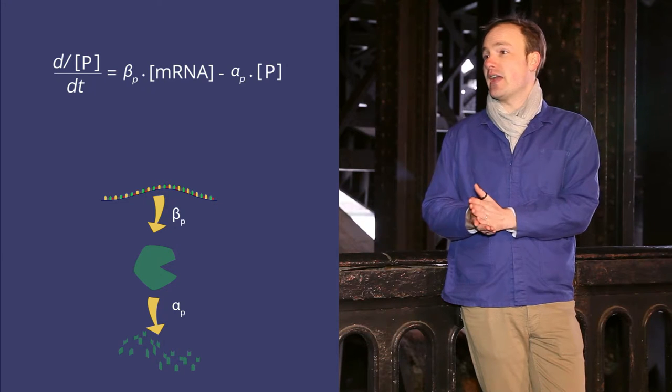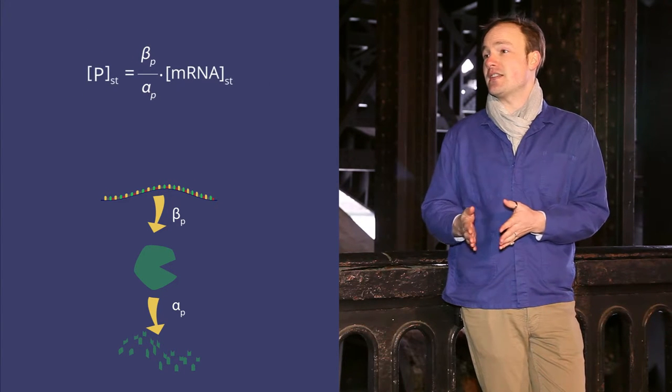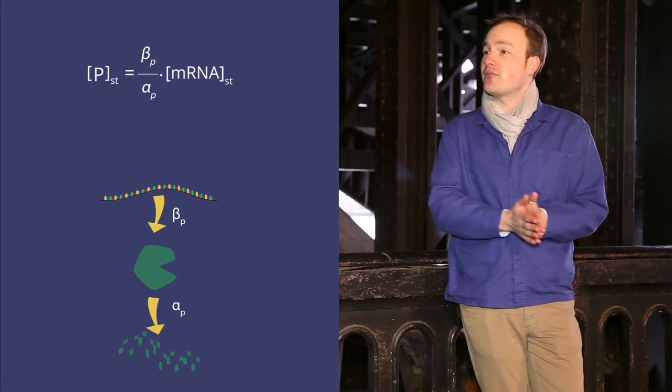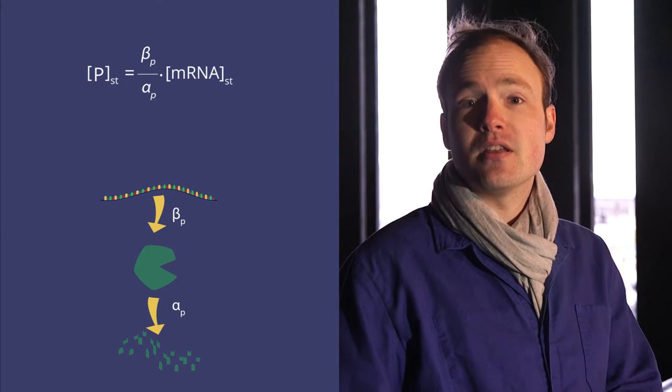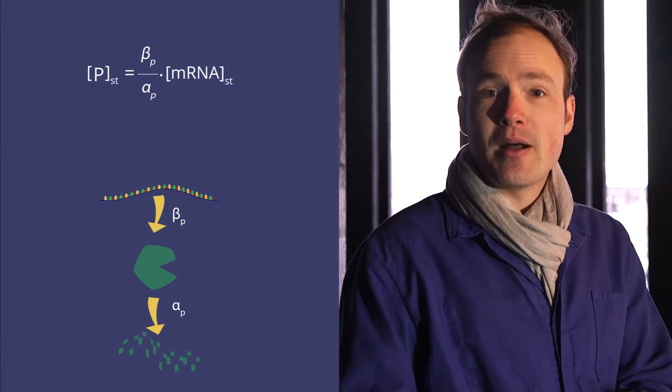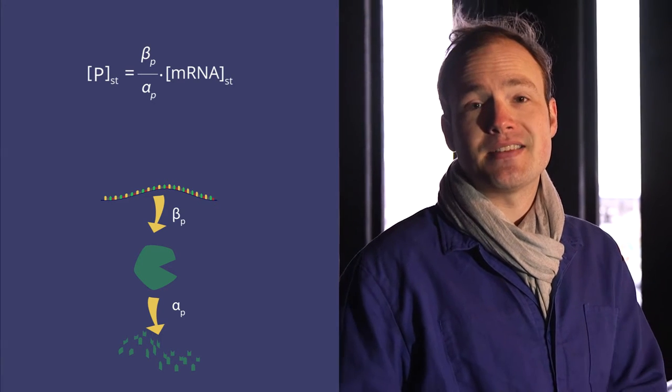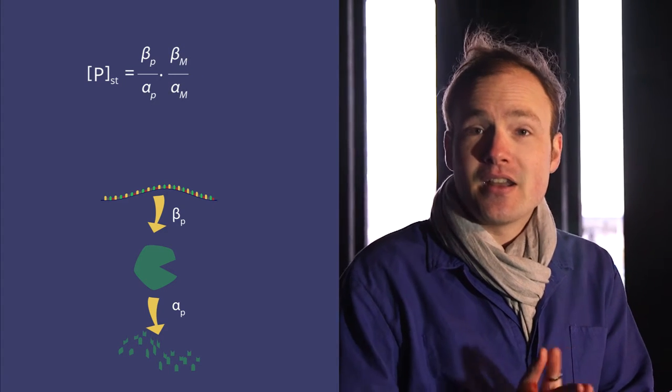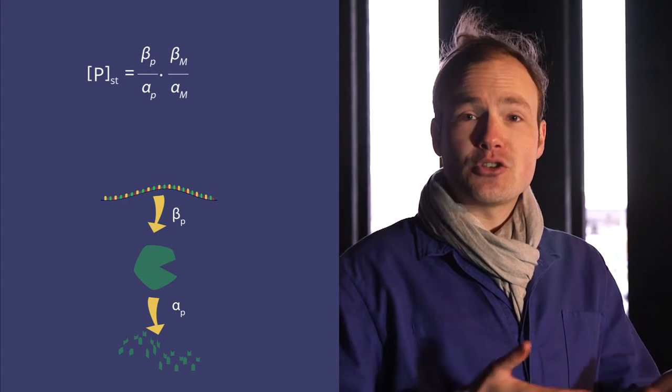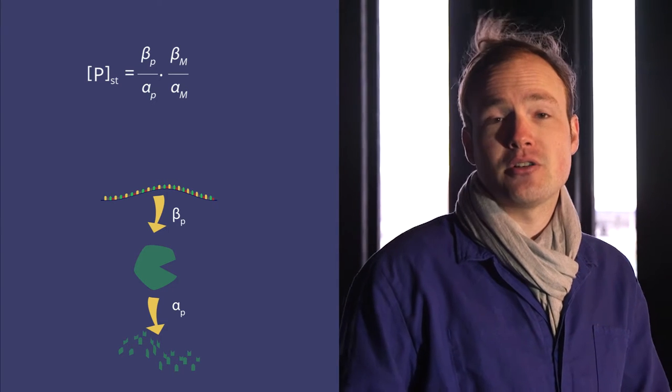Just like we did with RNA, we can solve this for the steady-state protein levels. We set the left-hand side to zero, do a little algebra, and we'll find this expression. We care about the protein production and degradation rates and the mRNA level. We know from last time that the steady-state mRNA level is just the ratio of the mRNA production and degradation rates.